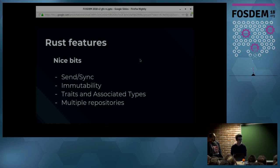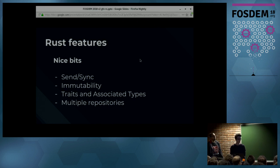Then there are traits and associated types, which we use quite heavily as you will see later. We split all things into multiple repositories — for example, one repository is the hardware abstraction layer, and then for each backend we have an additional repository.